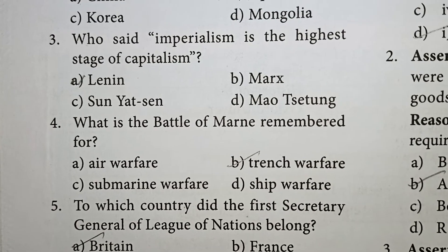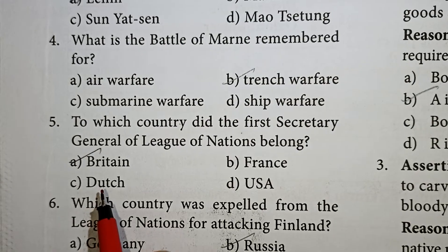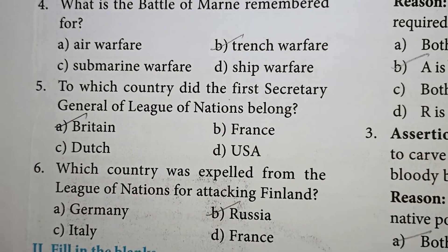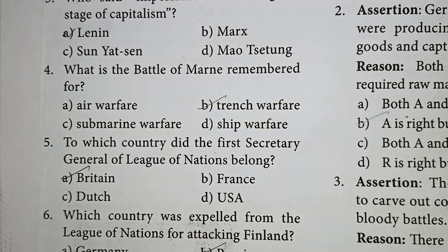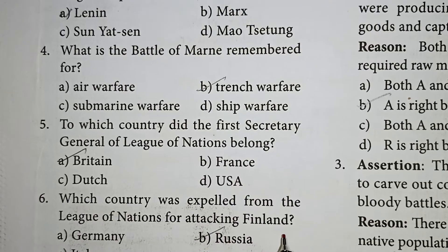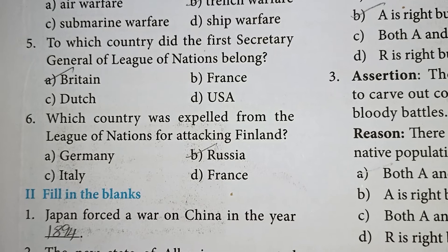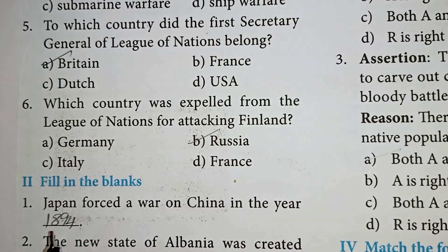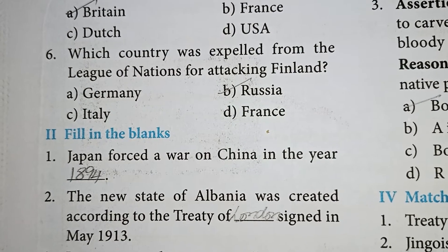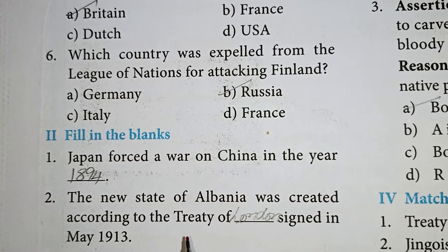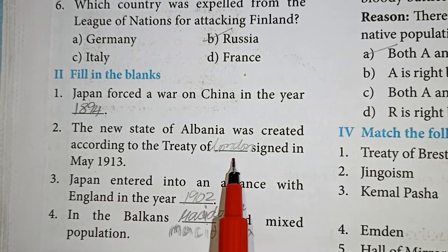To which country did the first Secretary General of the League of Nations belong? Britain is correct. Which country was expelled from the League of Nations for attacking Finland? Russia is correct. Japan forced a war on China in the year 1894. The new state of Albania was created according to the Treaty of London signed in May 1913.